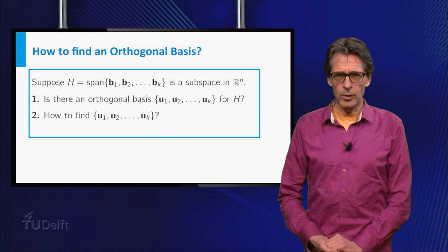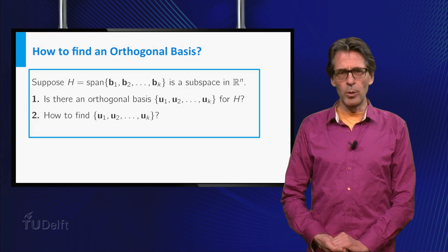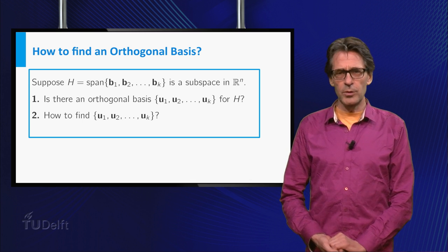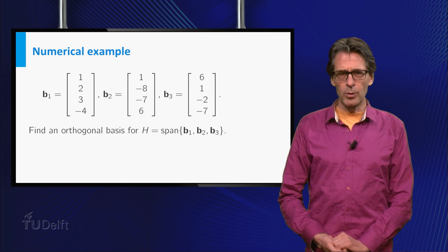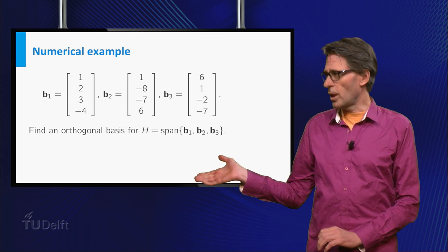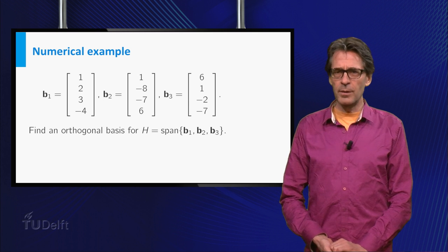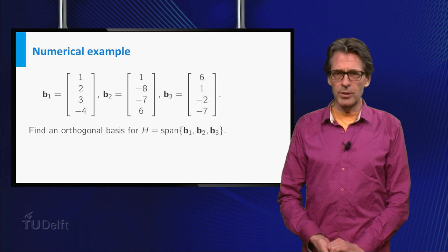The general construction starts from any basis b1 up to bk of some subspace in Rn. Along the way I will illustrate what I am doing with the example of the subspace h on the slide. The vectors b1, b2, b3 are independent, so the dimension of h is 3.